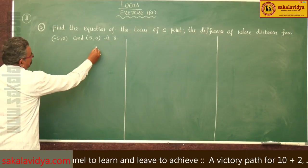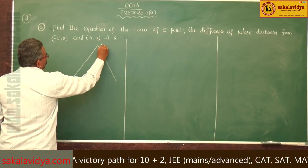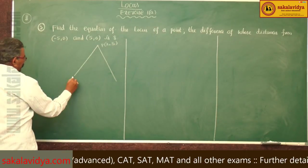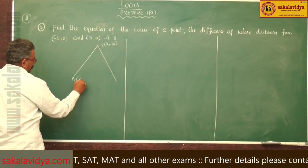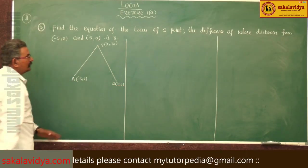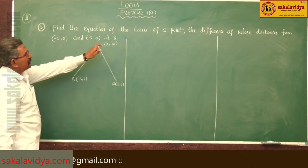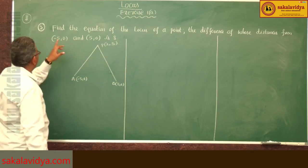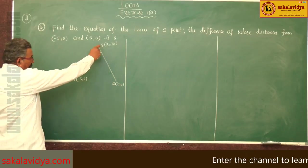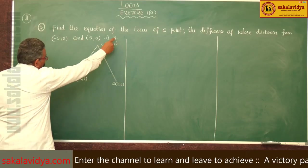Say this is P(x1, y1), A is (-5, 0), B is (5, 0). According to the problem, the difference of distances from (-5, 0) and (5, 0) is 8. That means the difference of the distances PA and PB equals 8.